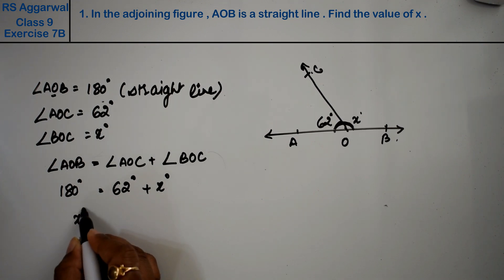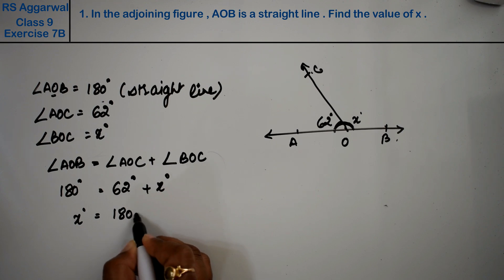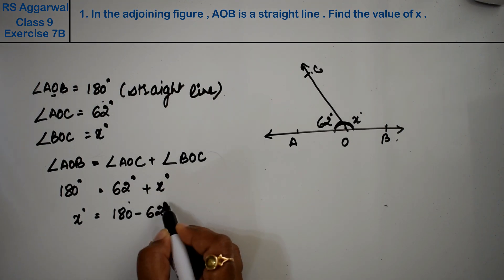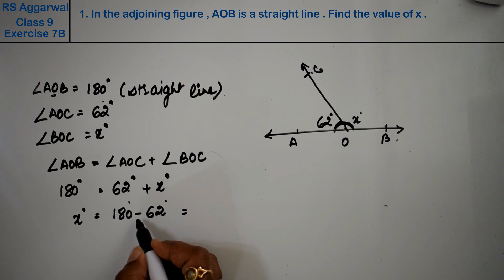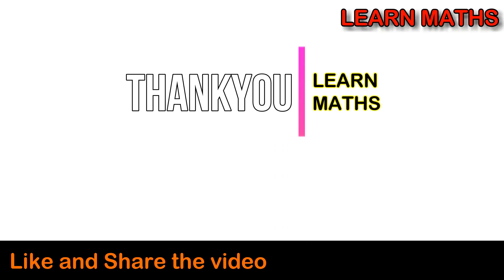What's the value of x? This plus will become minus when it moves. 180 minus 62 degrees equals to what? Let me write it below. x degrees equals to, 10 minus 2 is 8, 7 minus 6 is 1, so 118 degrees is the answer.